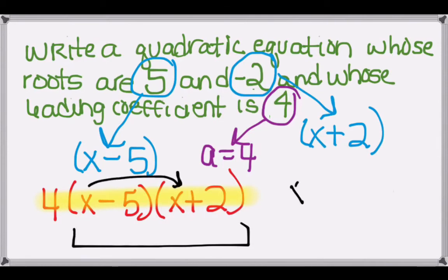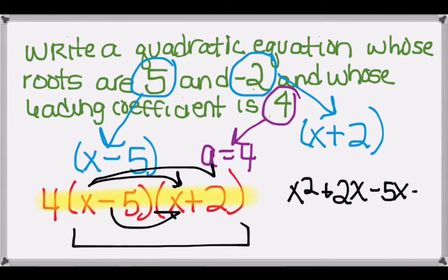So FOILing the (x minus 5) times (x plus 2) leaves us with x² plus 2x minus 5x minus 10. Keeping in mind we have the 4 out front, and inside we have x² minus 3x minus 10.